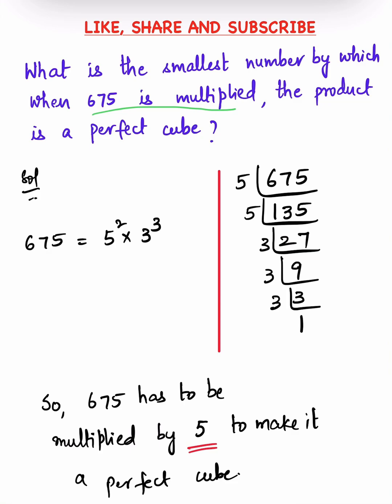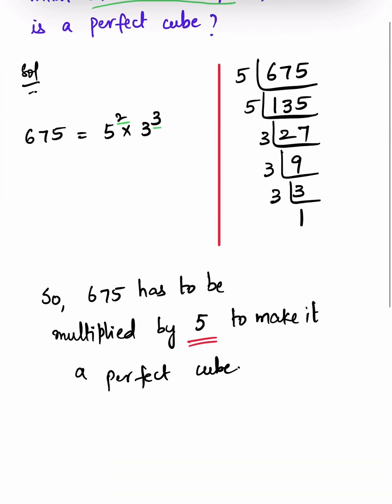Here it is equal to 5² × 3³. We have 3 as the power of 3, but here we have only two 5s, not three. So we have to multiply 675 with 5 to make it a perfect cube.